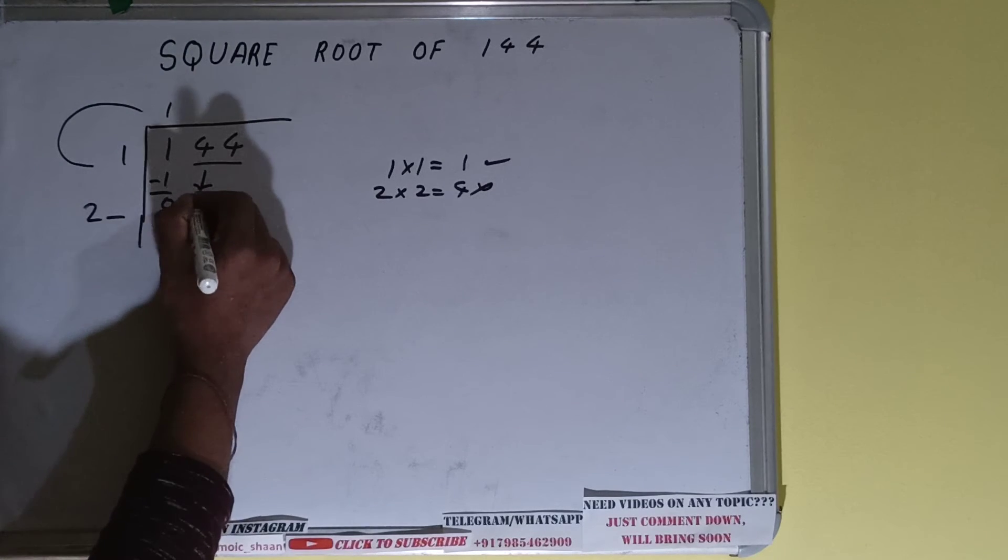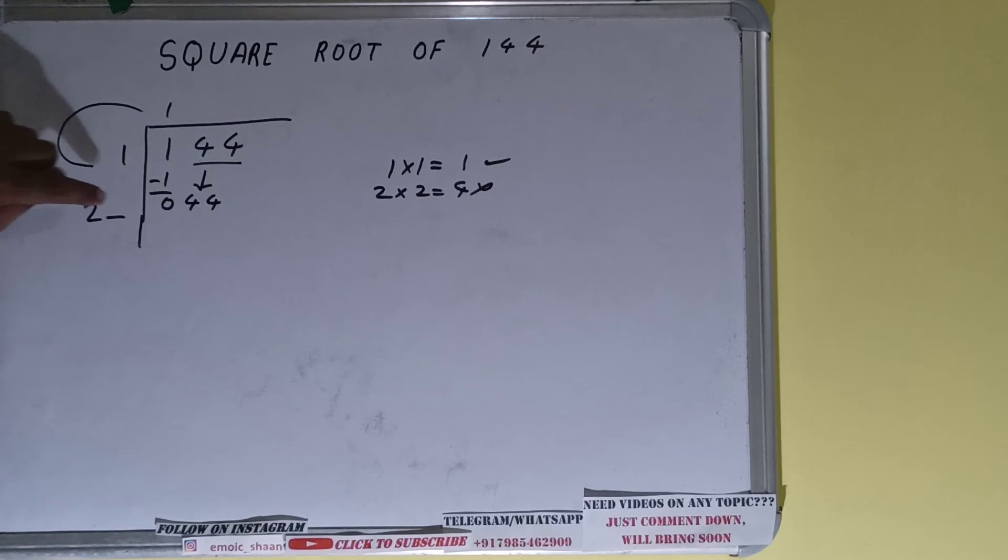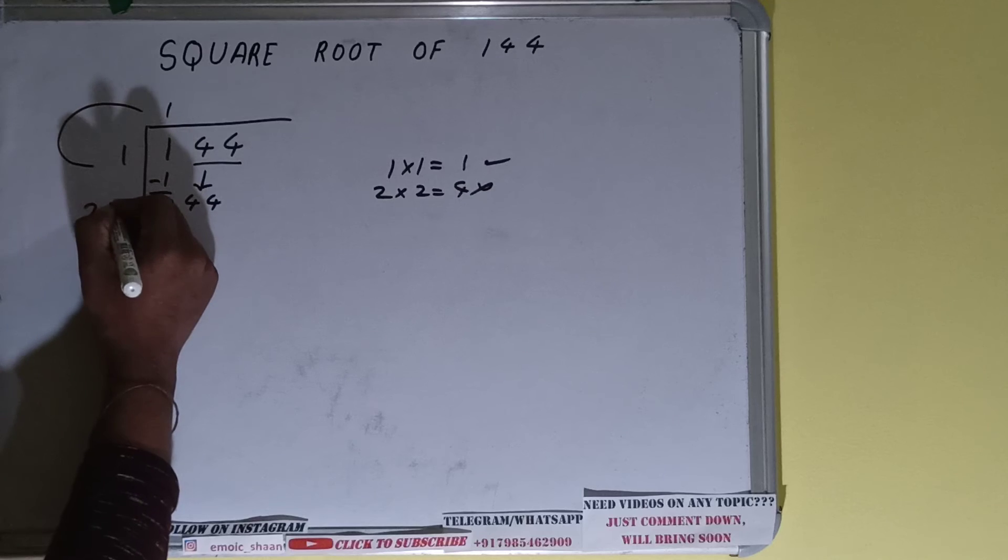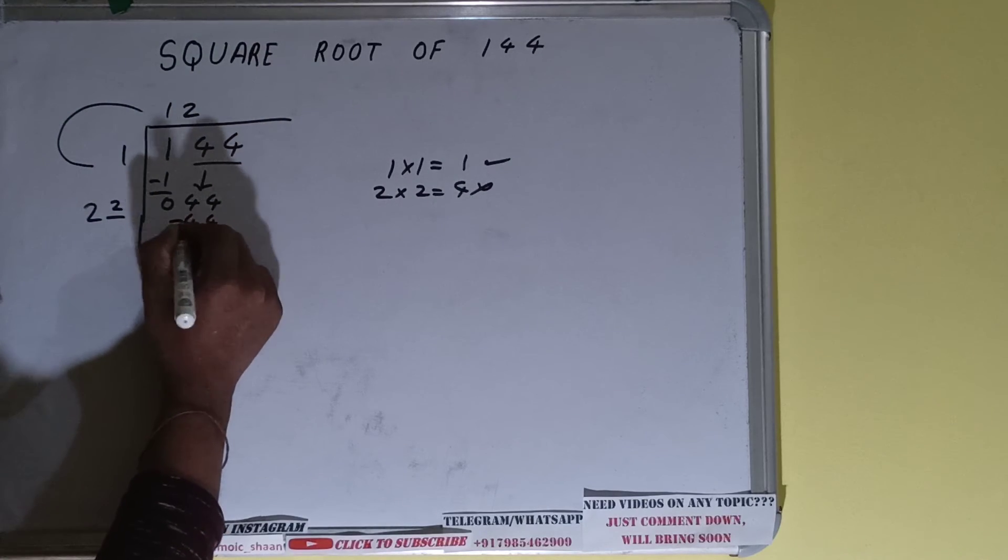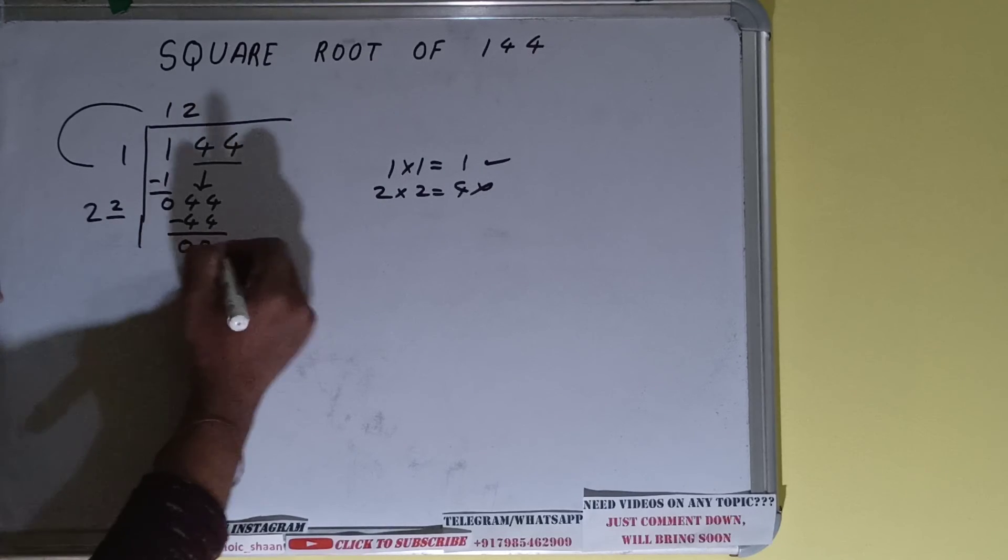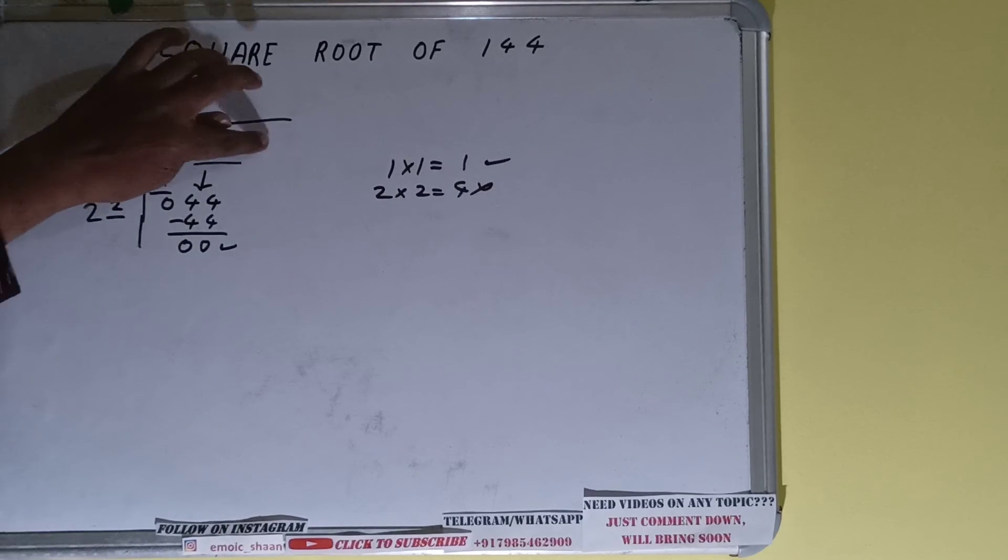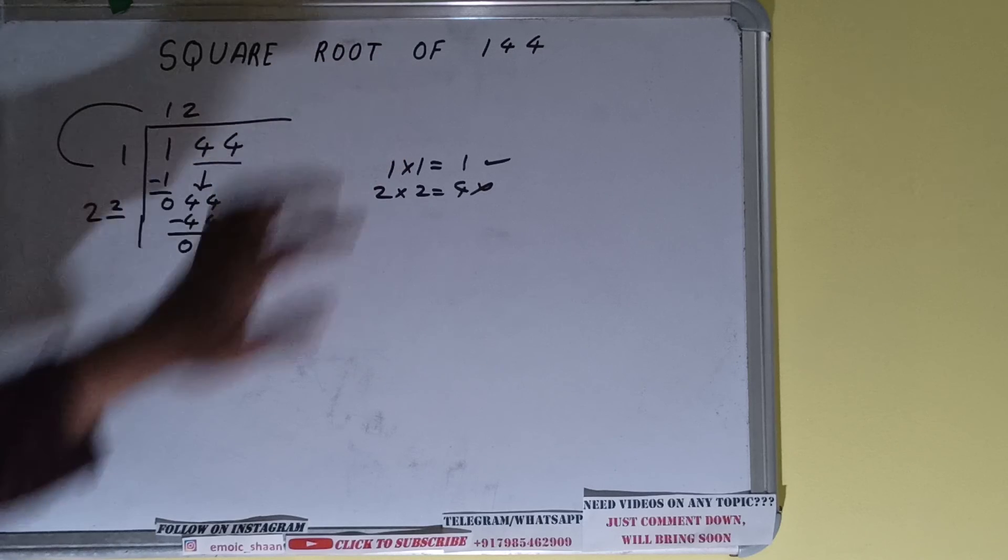Now whatever number we place here, we have to place here also. If we place two, then we'll get exactly 44—that will work. So on placing, we'll get 44. On subtracting, we'll get the remainder zero and we don't have any unused digit over here. So we got our answer, that is 12.